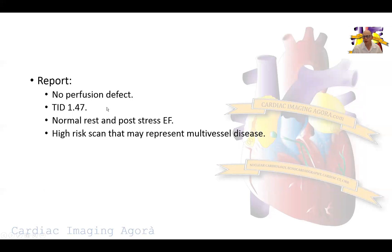This is what the report said: there were no perfusion defects, but the patient had a TID — transient ischemic dilatation — from rest to stress of 1.47, with normal rest and post-stress ejection fraction, making it a high-risk scan. The scan was read at the outside facility as possibly representing multi-vessel disease. This is the biggest nightmare for anyone who reads these scans: a normal perfusion scan with TID where you can miss balanced ischemia. TID is one of the parameters we use to alert us to the possible presence of multi-vessel ischemic disease that we have missed.